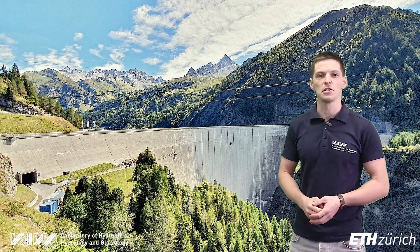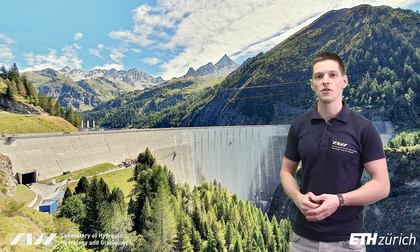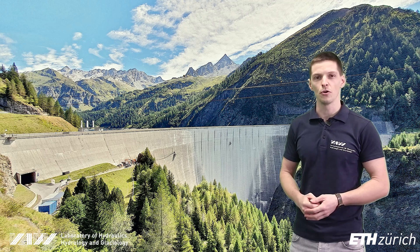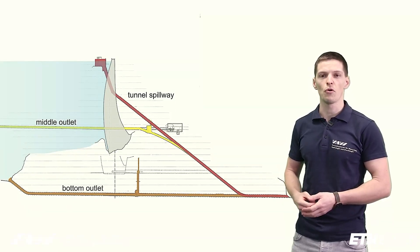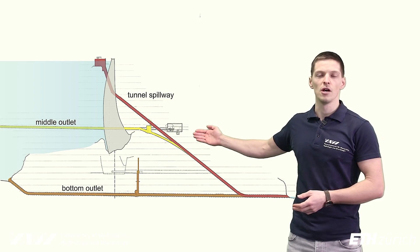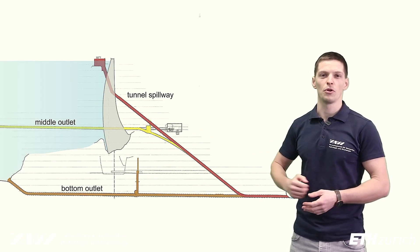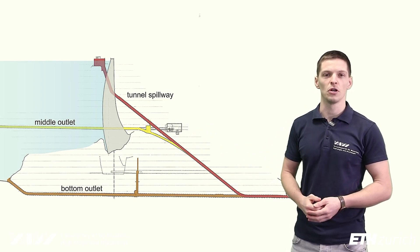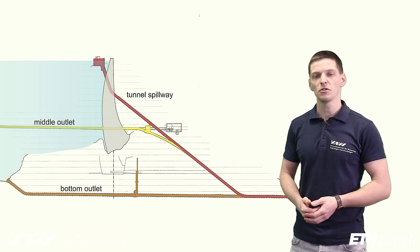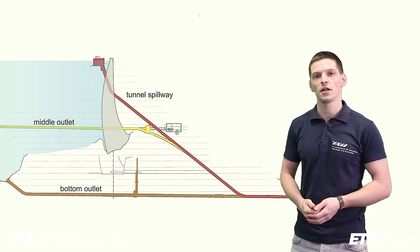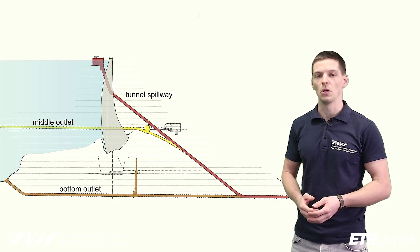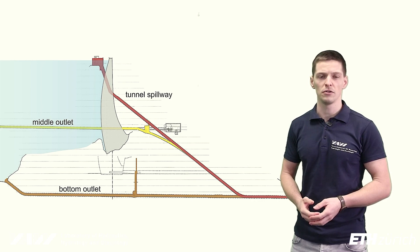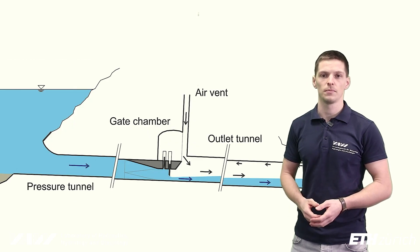The main purpose of these low-level outlets is to lower the reservoir level during emergencies or for maintenance works. In this longitudinal profile you can see a middle and a bottom outlet, which are both considered low-level outlets. The bottom outlet is located at the lowest point in the reservoir and typically goes below or around the dam through one of the abutments.